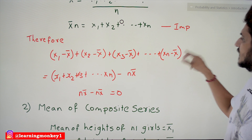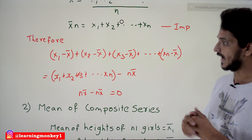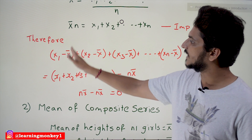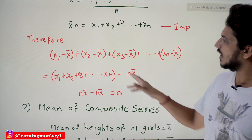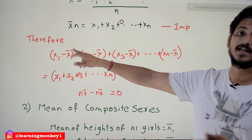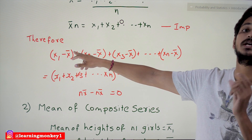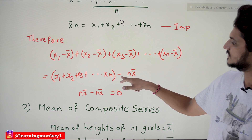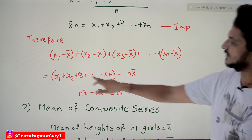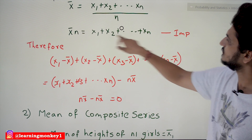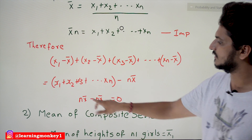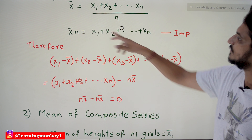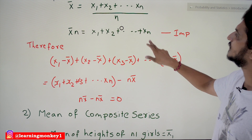Therefore, writing (x1 − x̄) + (x2 − x̄) + (x3 − x̄) + ... + (xn − x̄), if we separate the x terms and collect all the x̄ terms, there will be n x̄ values. This gives us (x1 + x2 + ... + xn) − n·x̄, which equals n·x̄ − n·x̄ = 0. That is why the sum of all deviations from the arithmetic mean is 0.